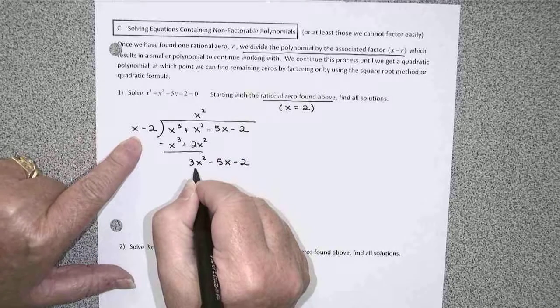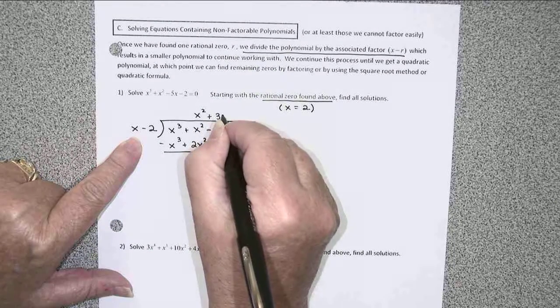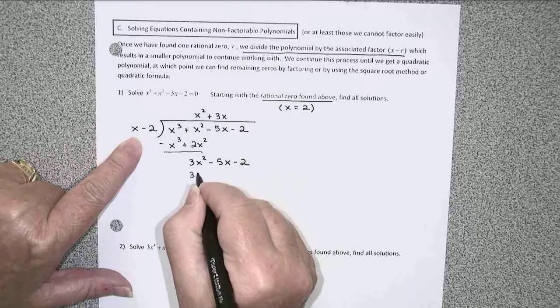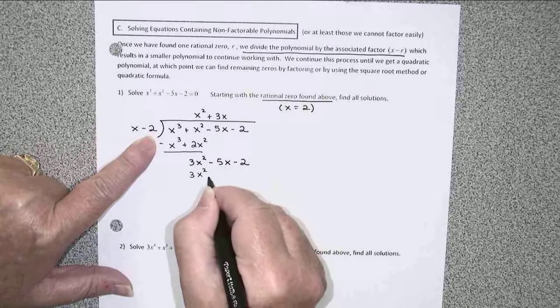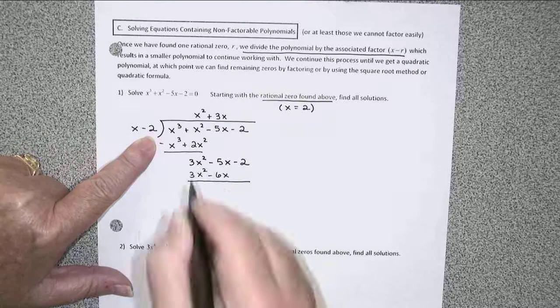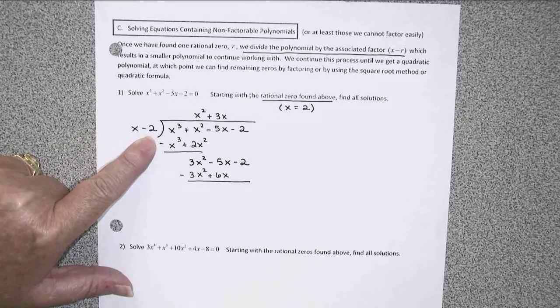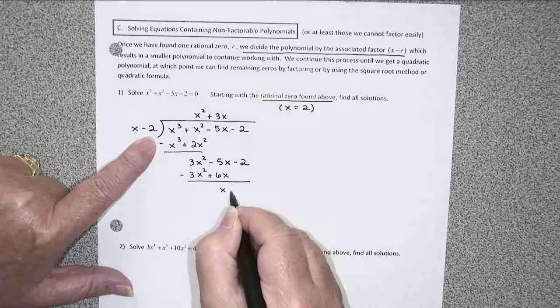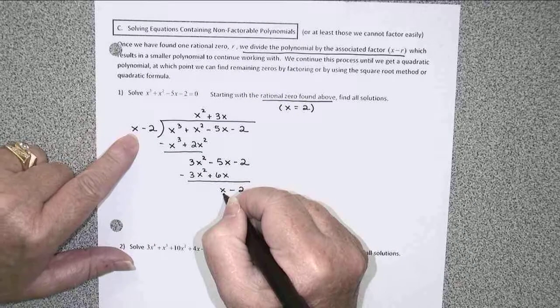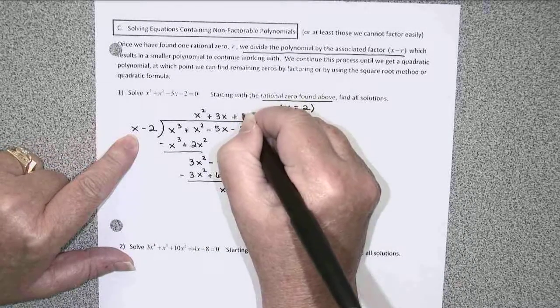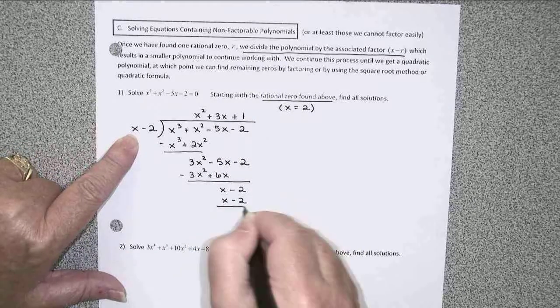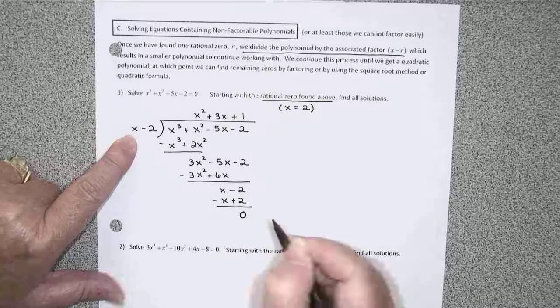Bring down the minus 5x and the minus 2. 3x squared divided by x is a positive 3x. Multiplying 3x squared minus 6x. Subtracting gives us 1x minus 2. x divided by x is 1, plus 1. 1 times x minus 2 is x minus 2. And subtracting, we get a remainder of 0.